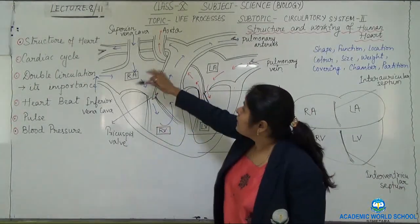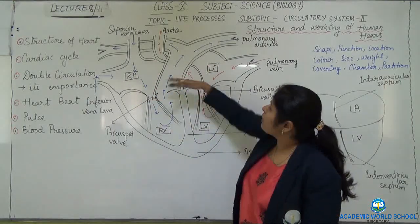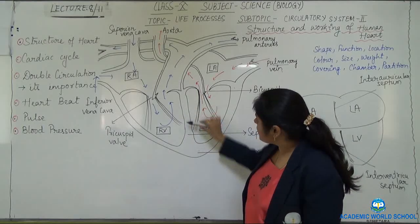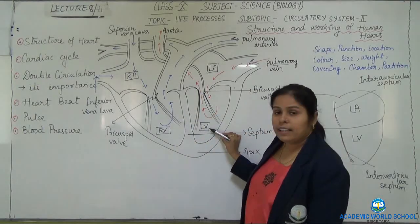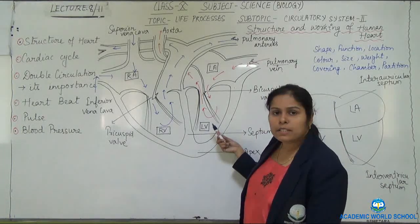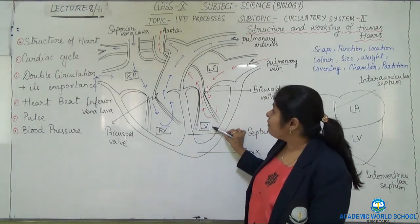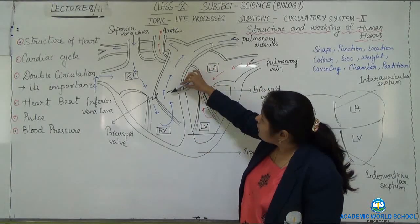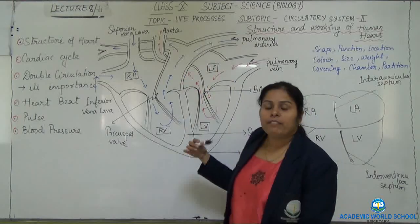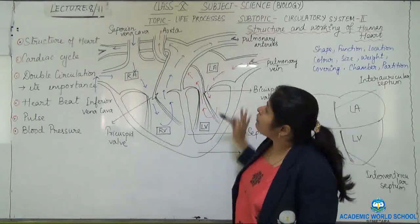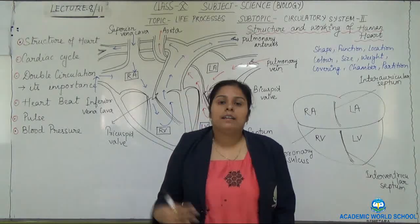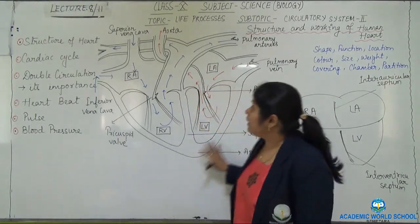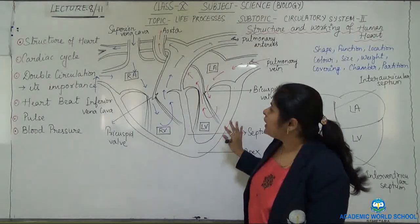The heart has four chambers — the upper two are the right auricle and left auricle, and the lower two are the right ventricle and left ventricle. A septum separates the right and left ventricles. The left ventricle has a thicker and more muscular wall compared to the right ventricle, because the left ventricle pumps blood to different parts of the body. You will also find semilunar valves here which prevent the backflow of blood. This is the structure and working of the human heart.